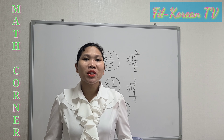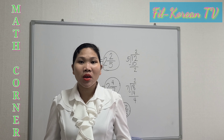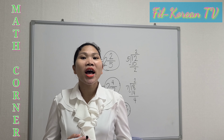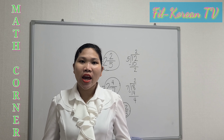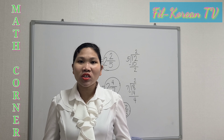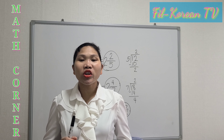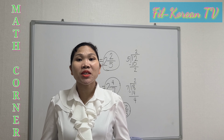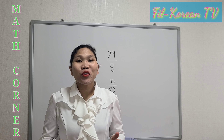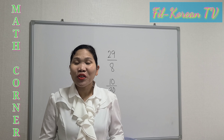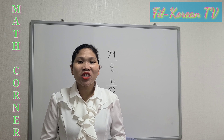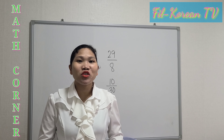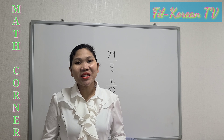Just remember the rule in simplifying and reducing fractions in lowest terms. For a proper fraction, just get the GCF and divide the numerator and the denominator by it. For improper fractions, divide the numerator by the denominator and the answer is always a mixed number. I hope you learned from this video. Thank you so much for watching. If you are new to our channel, please subscribe and click the notification bell so that you will be updated when we have a new video. See you next time. God bless.